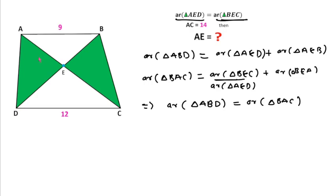With the same base AB for these two triangles and the same height, we can say AB is parallel to CD. Triangle ABD is similar to triangle BAC.